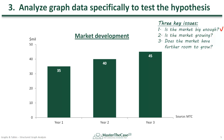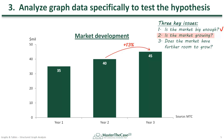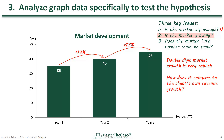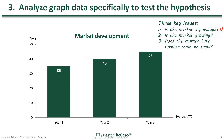Let's now analyze the second key issue: is the market growing? We can see that the market has grown from $35 to $45 million over the past two years. Additionally, we can quantify that over the last year the market grew by 13% and the year before by 14%. So we'll say that double-digit market growth is very robust. And again, we can put this growth in perspective by asking how it compares to the client's own revenue growth. Let's suppose that this market's growth is substantially above the client's own growth. This tells us that the market is not only growing, but is also doing so at a faster rate than the client's own revenue, which positively answers our second key issue.